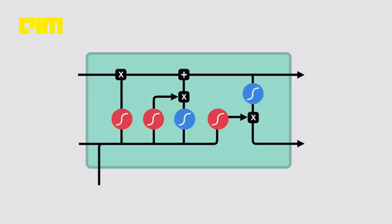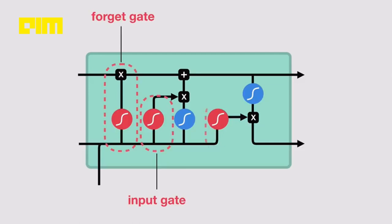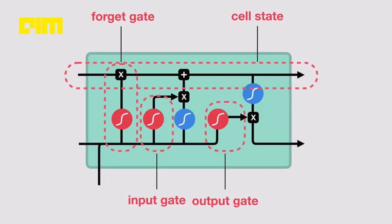These gates process information with the help of sigmoid and tanh functions that help avert the problem of vanishing and exploding gradients.